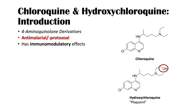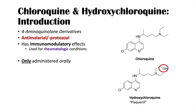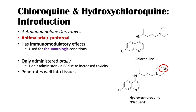They also have immunomodulatory effects and can be used to treat rheumatological conditions as well. These medications are only administered orally — you never want to use them IV because they have increased toxicity with IV use. They both penetrate well into tissues and have wide distribution. After ingestion, these are both primarily metabolized in the liver, so they have hepatic metabolism.